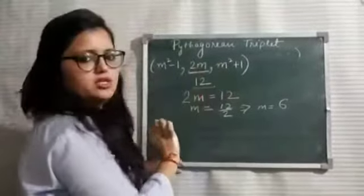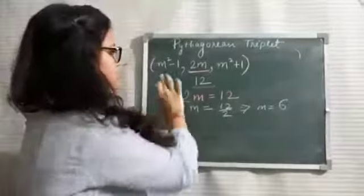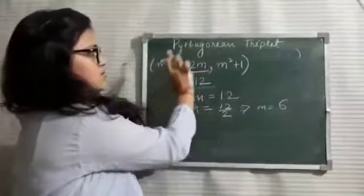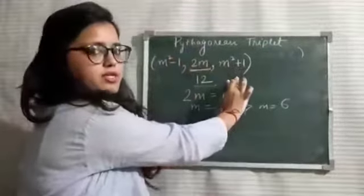2M is already used now. We cannot use it again. The remaining two numbers are M square minus 1 and M square plus 1.